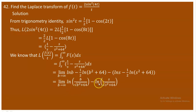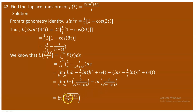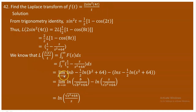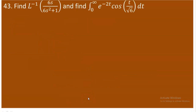The first term goes to zero, leaving 0 - ln(s / √(s² + 64)). The negative sign flips it to the reciprocal: ln(√(s² + 64) / s). So the Laplace transform of 2sin²(4t)/t is ln(√(s² + 64) / s). That completes question 42. Next is question 43: find the inverse Laplace of 6s/(6s² + 1), and evaluate the integral from 0 to ∞ of e^(-2t) · cos(t/√6) dt.